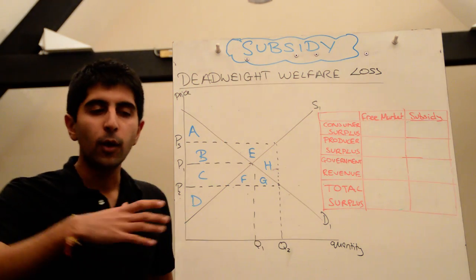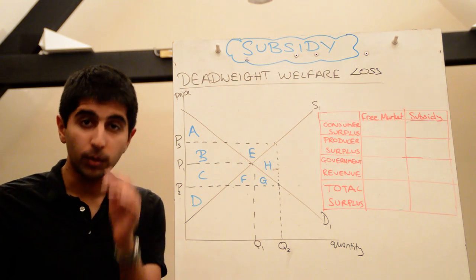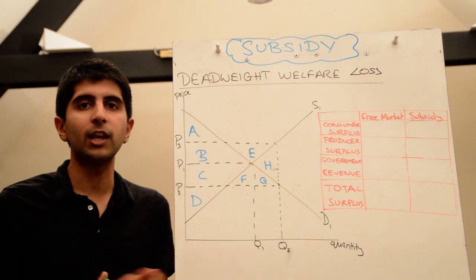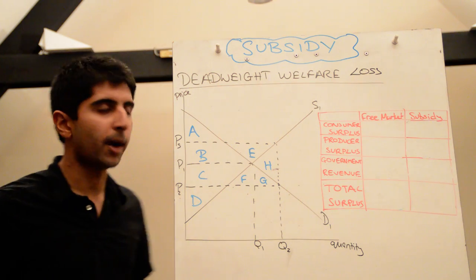In this video we're going to understand why that little triangle represents a welfare loss to society. Now remember, with welfare loss we are always isolating producer and consumer surpluses and by the end we will see that the total surplus in the market will have fallen as a result of a subsidy changing the market outcomes.